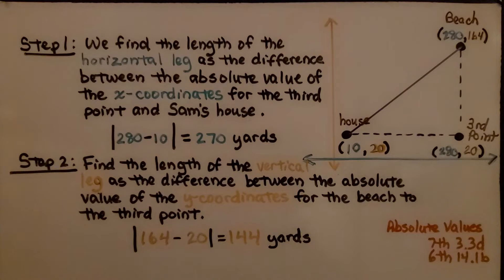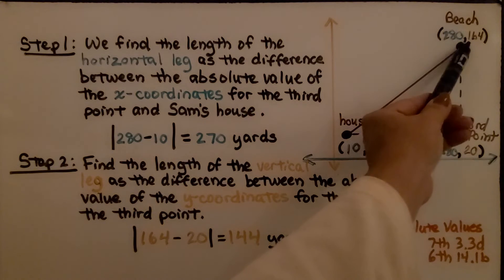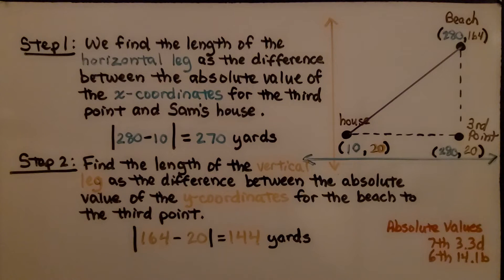Step two, we find the length of the vertical leg as the difference between the absolute value of the y coordinates for the beach to the third point. So we have 164 and 20. We subtract them, find the absolute value, and that's 144 yards.